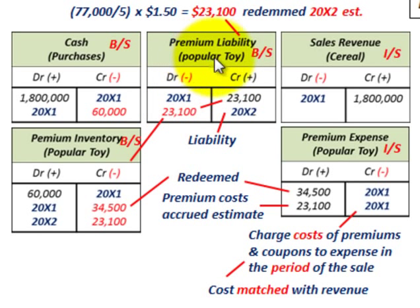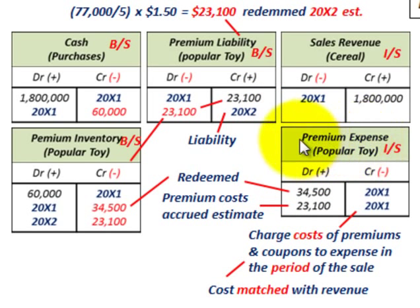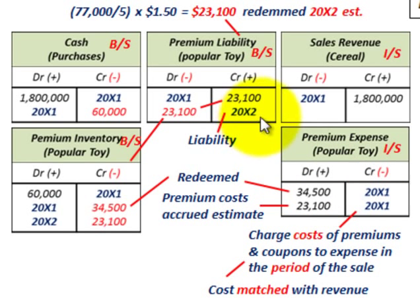The key takeaways: you must set up a premium liability account on your balance sheet for any cost not yet redeemed in the current period, then charge it off against inventory when actually redeemed. And remember — premium expense must be matched with the revenue. Even if coupons sitting in sold cereal boxes haven't all been redeemed, you still recognize the expense in the period of sale. Costs are matched to revenue. That covers this basic example of premium coupons or rebates.